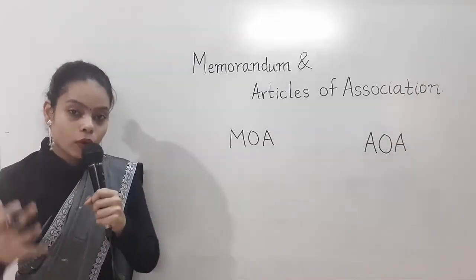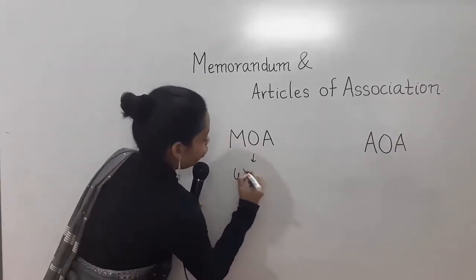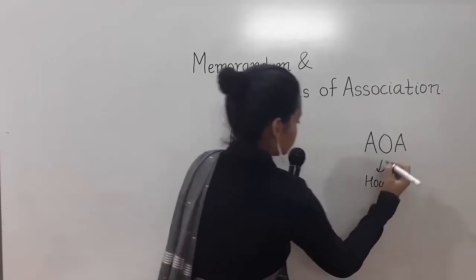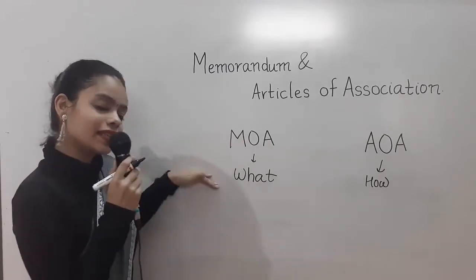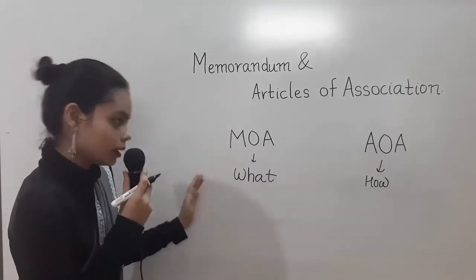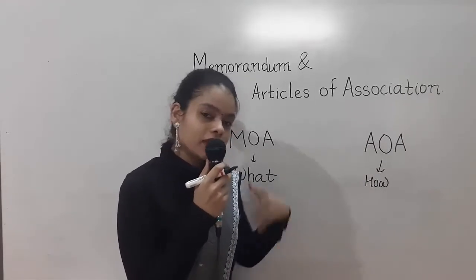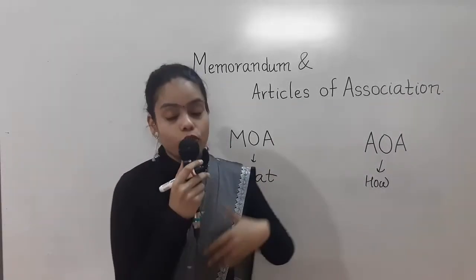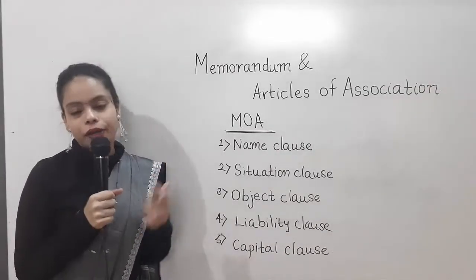MOA, that is memorandum of association, gives us the answer to the question: What? And AOA gives us the answer to the question: How? The memorandum of association tells us what the company is, what its objectives are, and anything and everything you want to know about the company. On the other hand, articles of association tells us how the company will function, how decisions will be taken, what the liabilities will be, and what the authorities of each member and director of the company will be. Let's understand memorandum of association first.